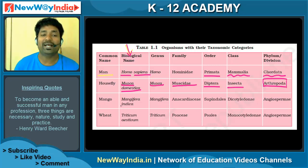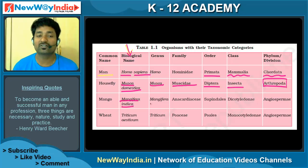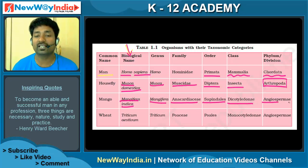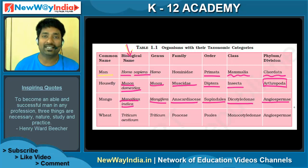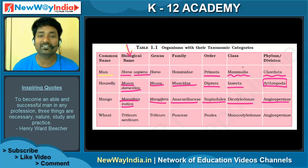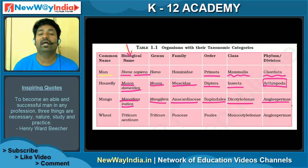The same way, mango: the scientific name is Mangifera indica, as I mentioned in the previous videos. Mangifera is the genus and indica is the species. The family is Anacardaceae, order is Sapindales, class is Dicotyledon, division is Angiospermia, and kingdom is Plantae.